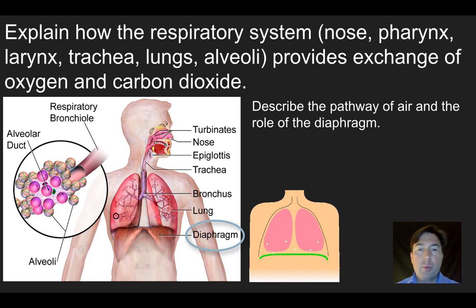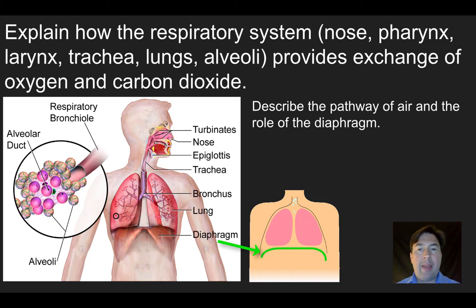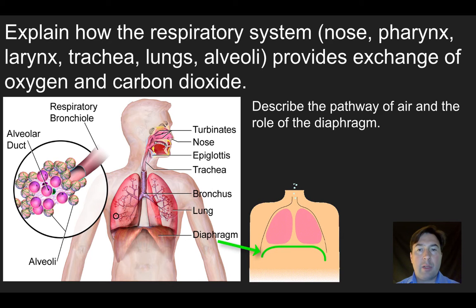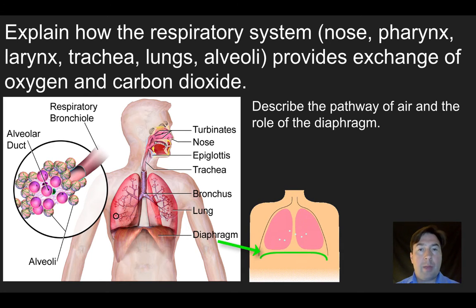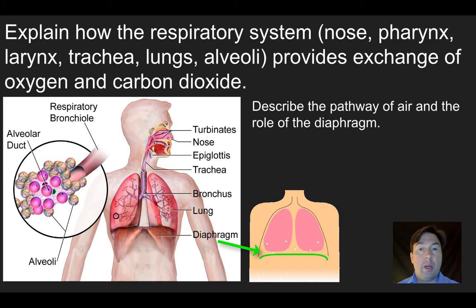The diaphragm is a smooth muscle on the underside of your ribcage. When it contracts, it pulls down, increasing the volume within the lung cavity, and as a result air is drawn in. When that muscle relaxes, it pushes up, making the cavity smaller, and as a result air is pushed out of the lungs.